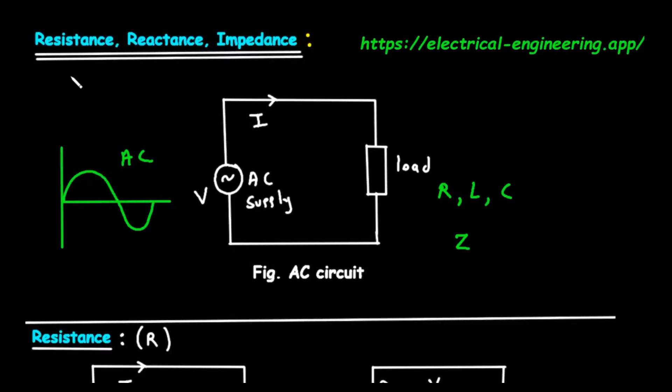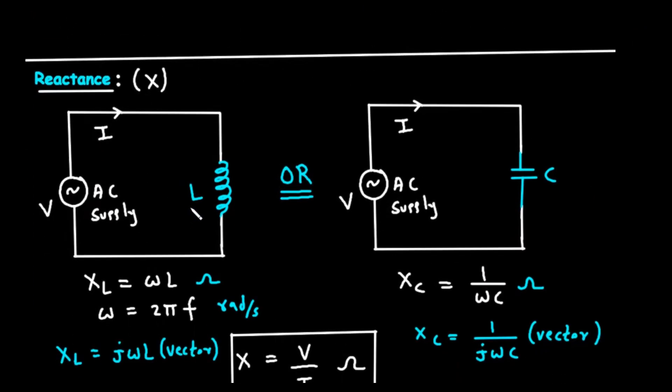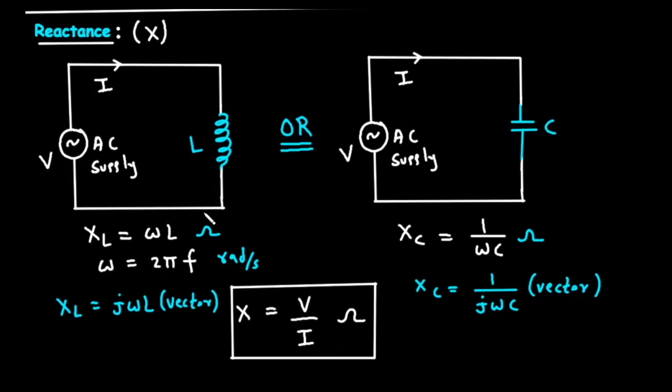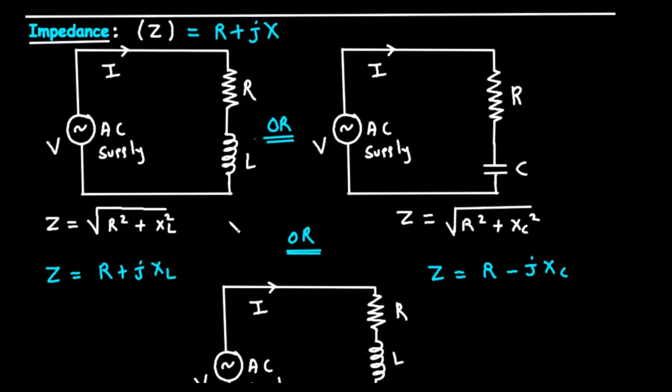So, to recap: resistance is the simple opposition that creates heat. Reactance is the frequency-dependent opposition from inductors and capacitors that involve storing energy and shifting phases. And impedance is the grand total,